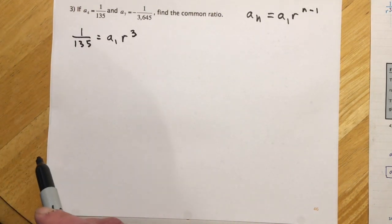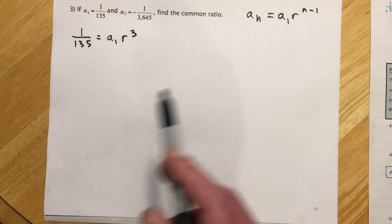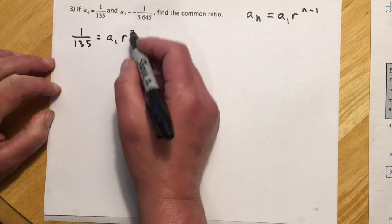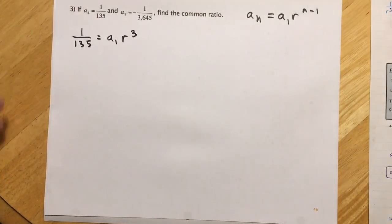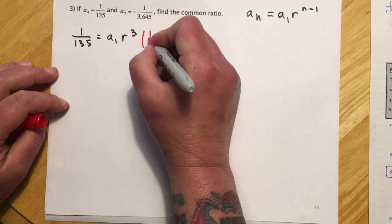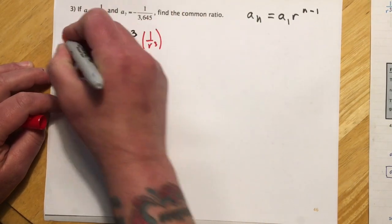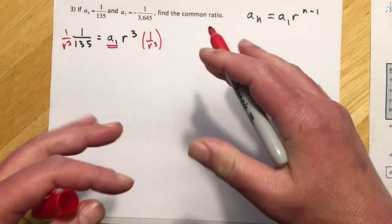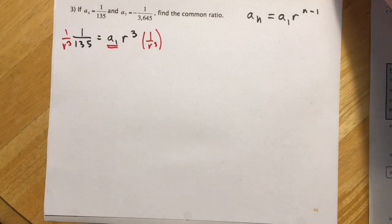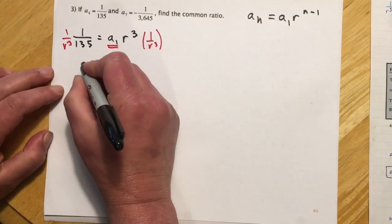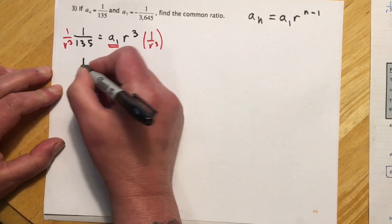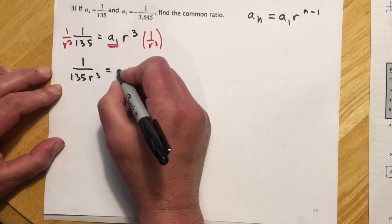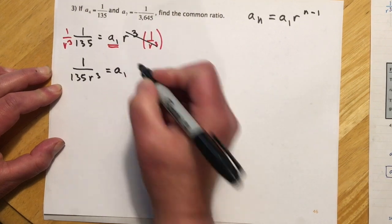This I could solve, and I think I'm going to, because of where the r is locked up in here, I think I'm going to solve this for a sub 1. So I'm going to multiply both sides by 1 over r cubed. And I'm going to isolate this a sub 1, and then I'm going to do a substitution here in a second. So this side will look like, if I make it look a little bit nicer, 1 over 135 r cubed equals a sub 1.